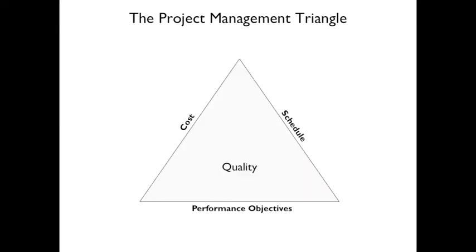Here's the project management triangle. You have constant trade-offs between cost, schedule, and performance. Performance is what you're going to do. As you try to do more and more, the cost goes up and the schedule gets longer. If you need it faster, sometimes doing it faster might increase cost.